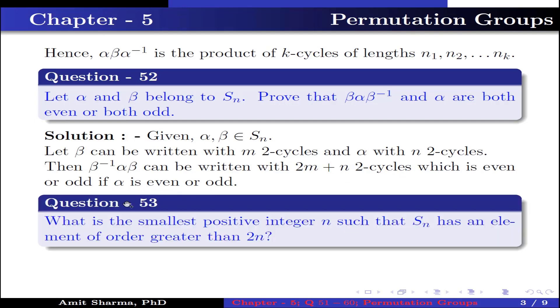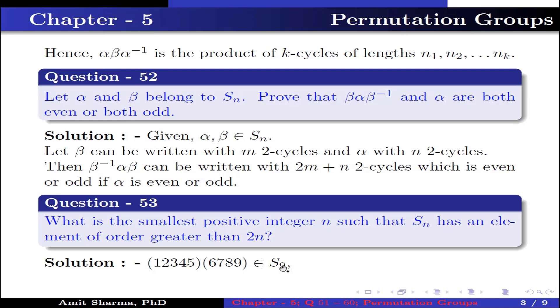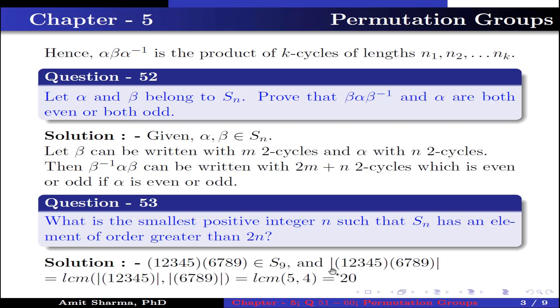Question number 53. What is the smallest positive integer n such that Sn has an element of order greater than 2n? The product of the permutation (1 2 3 4 5)(6 7 8 9) belongs to Sn, and the order of this permutation (1 2 3 4 5)(6 7 8 9) is equal to lcm of the order of (1 2 3 4 5) and the order of (6 7 8 9).